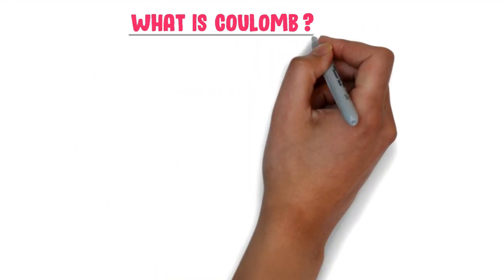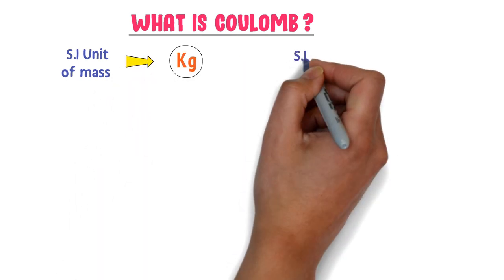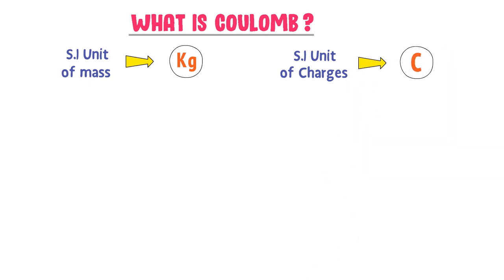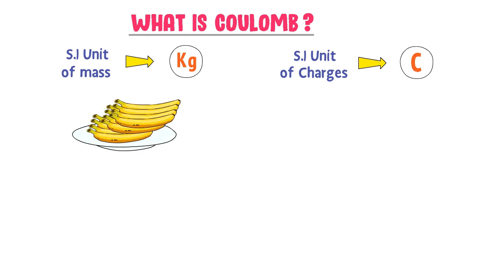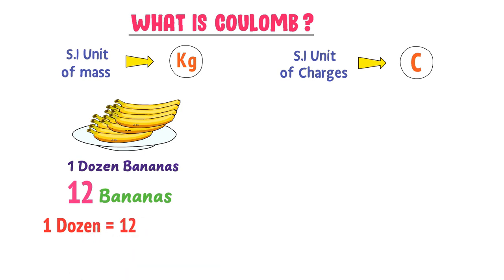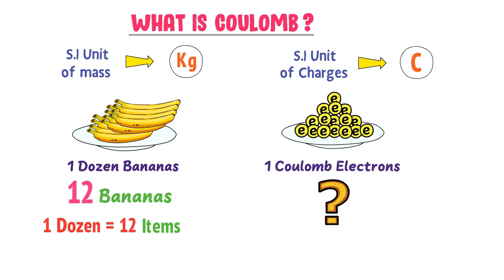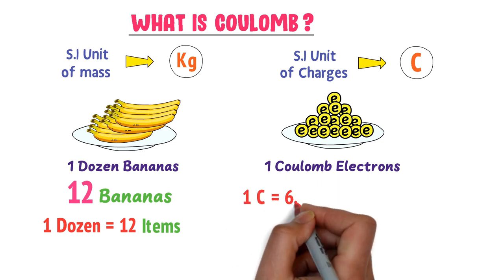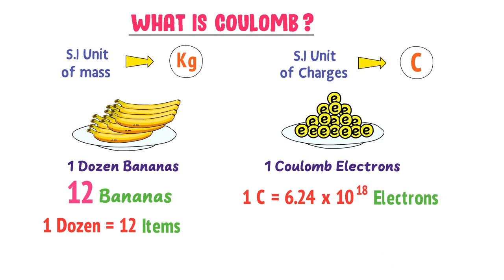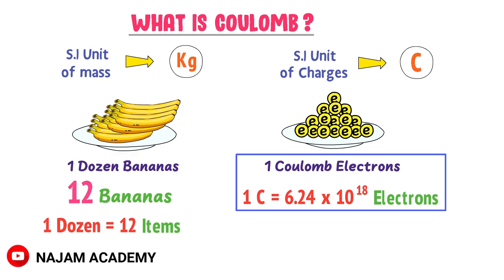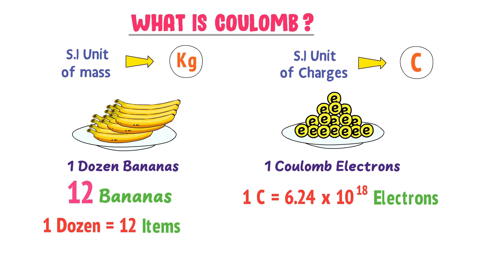Now, what is a coulomb? The SI unit of mass is kg. Similarly, the SI unit of charges is coulomb, represented by capital C. Consider a plate of bananas — if I say there is one dozen bananas, you understand there are 12. Likewise, one coulomb of electrons is equal to 6.24 × 10¹⁸ electrons. So just as one dozen bananas contains 12 bananas, one coulomb contains 6.24 × 10¹⁸ electrons. We measure charges in coulombs.